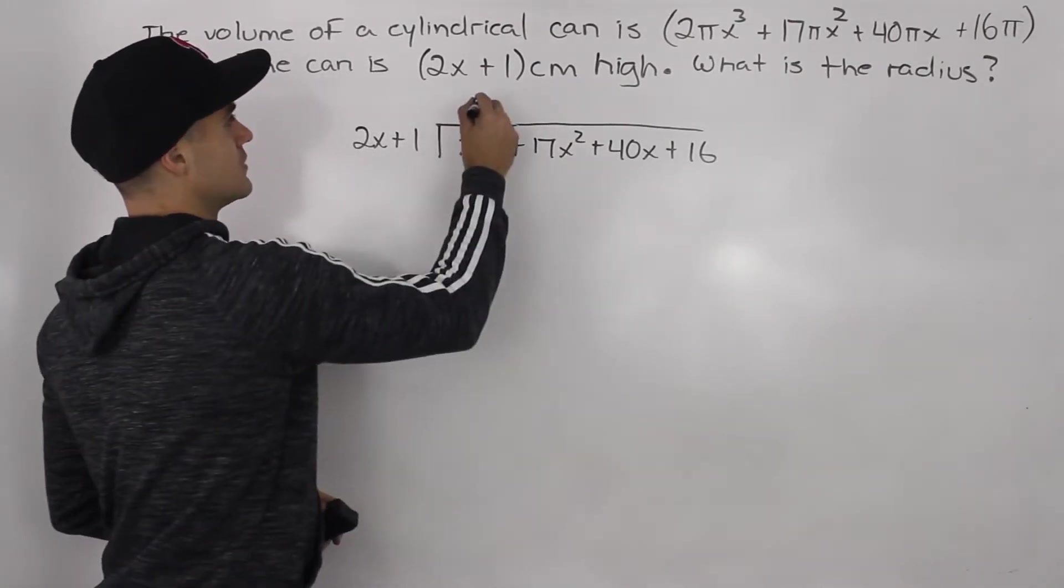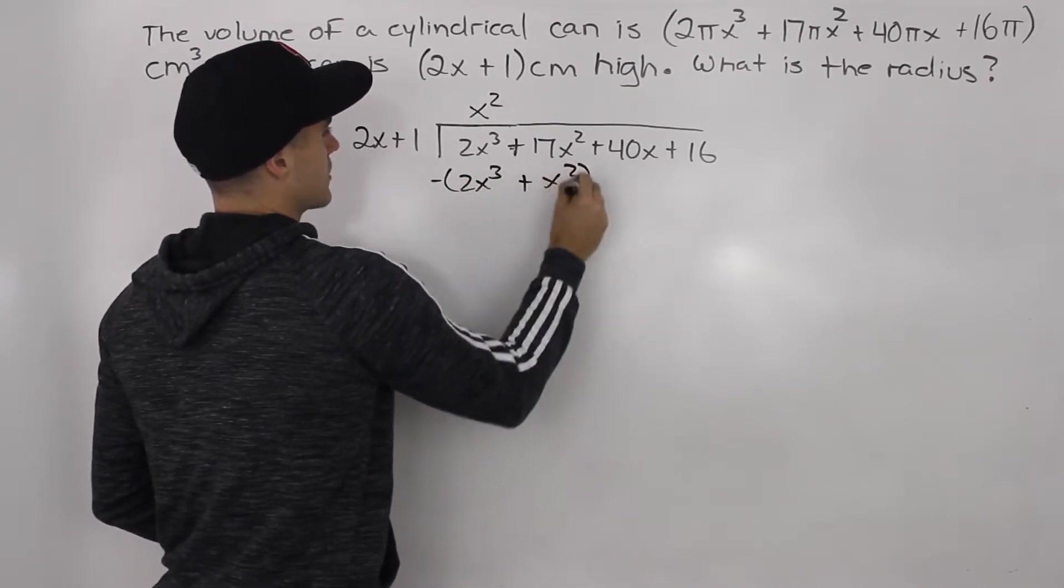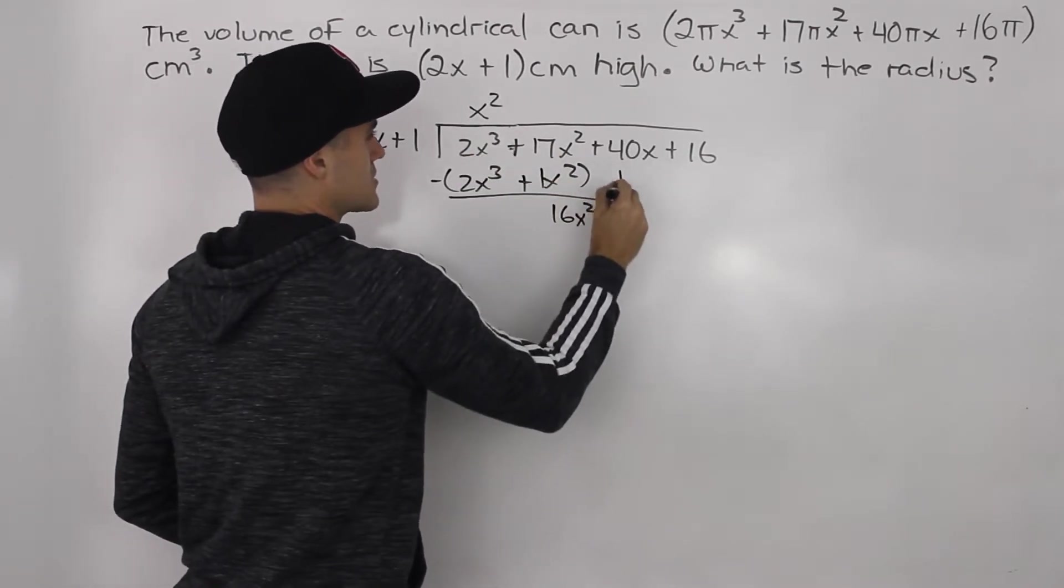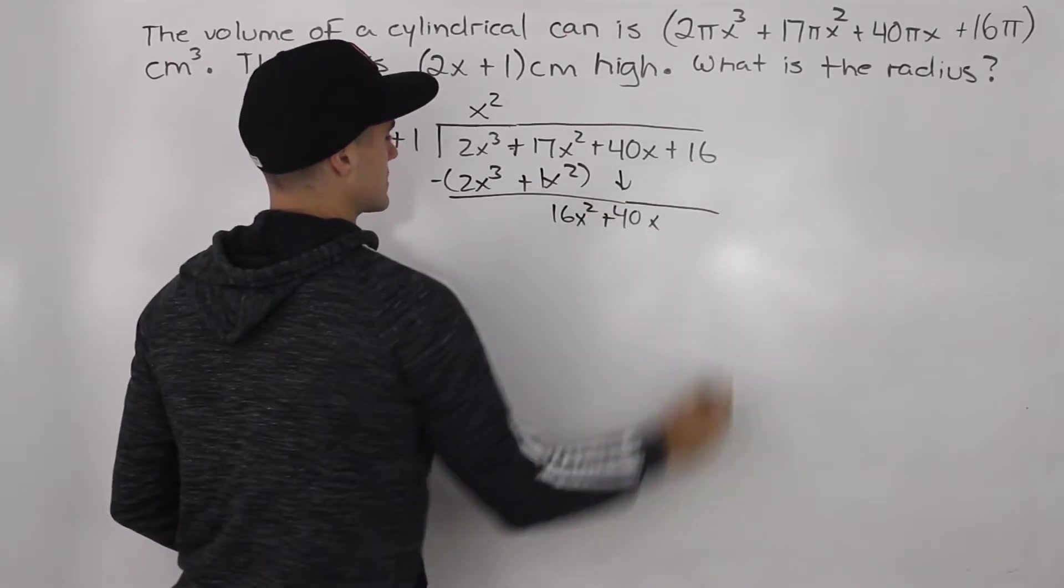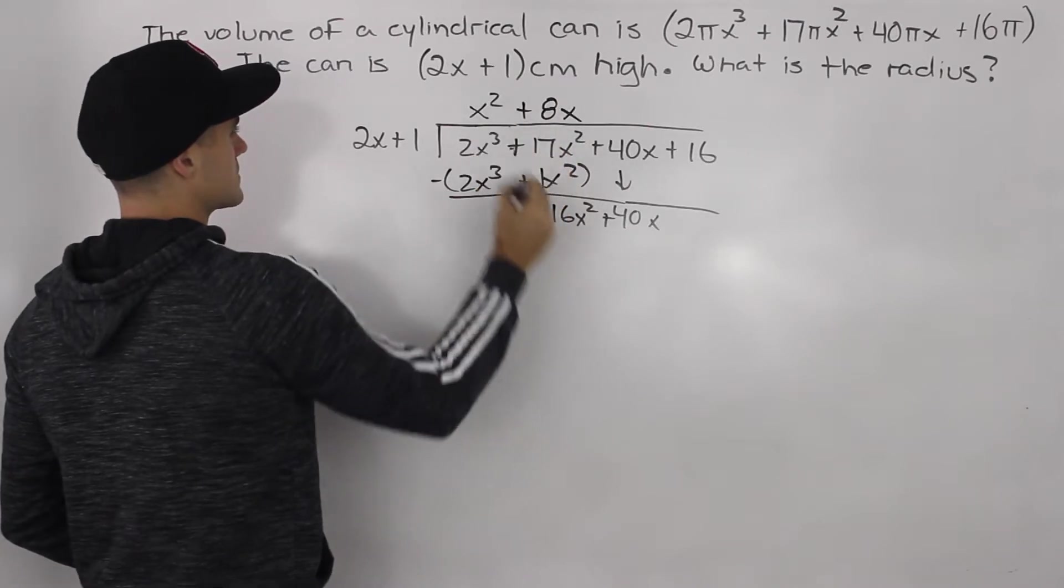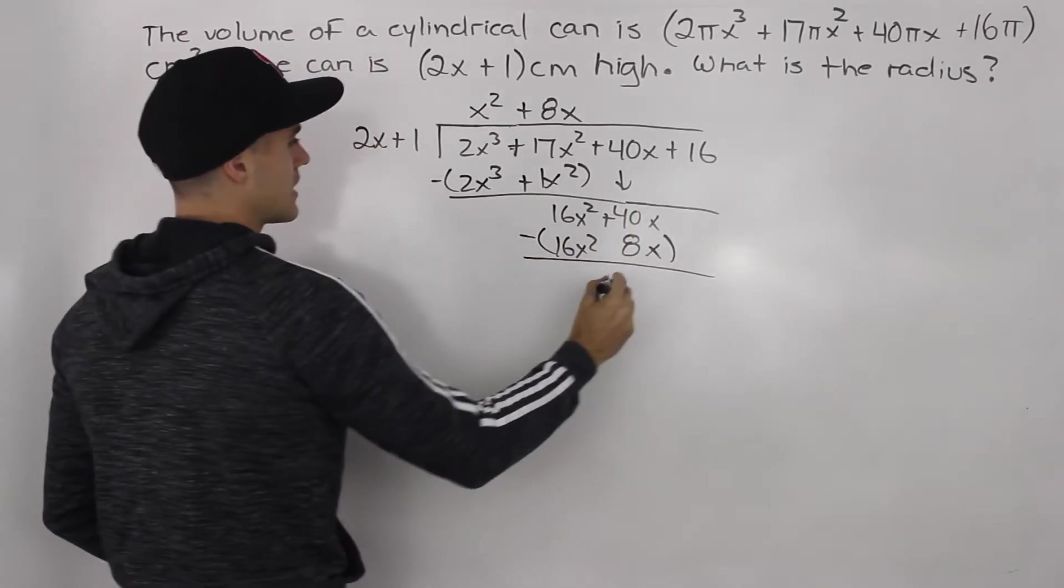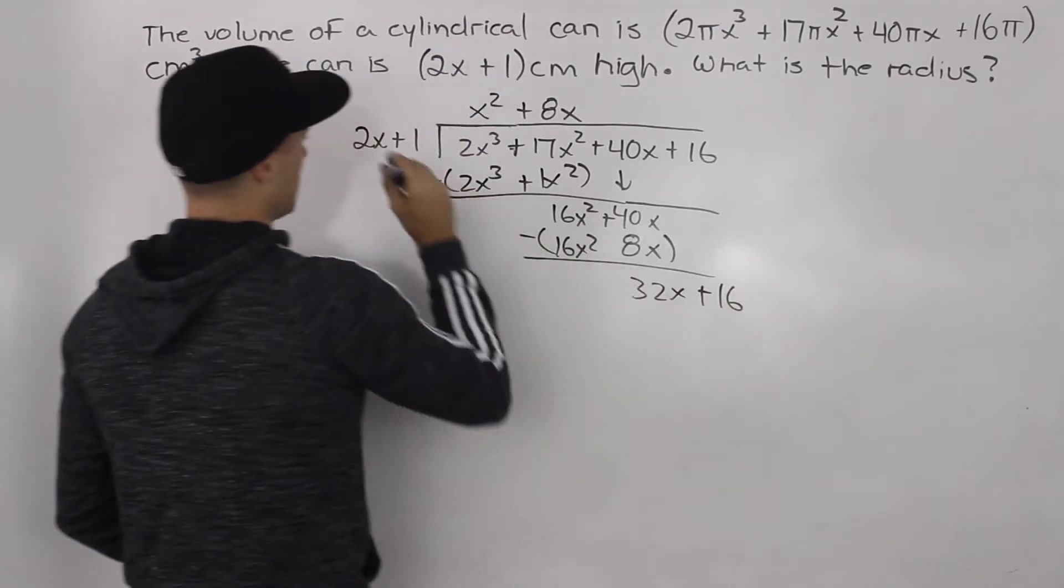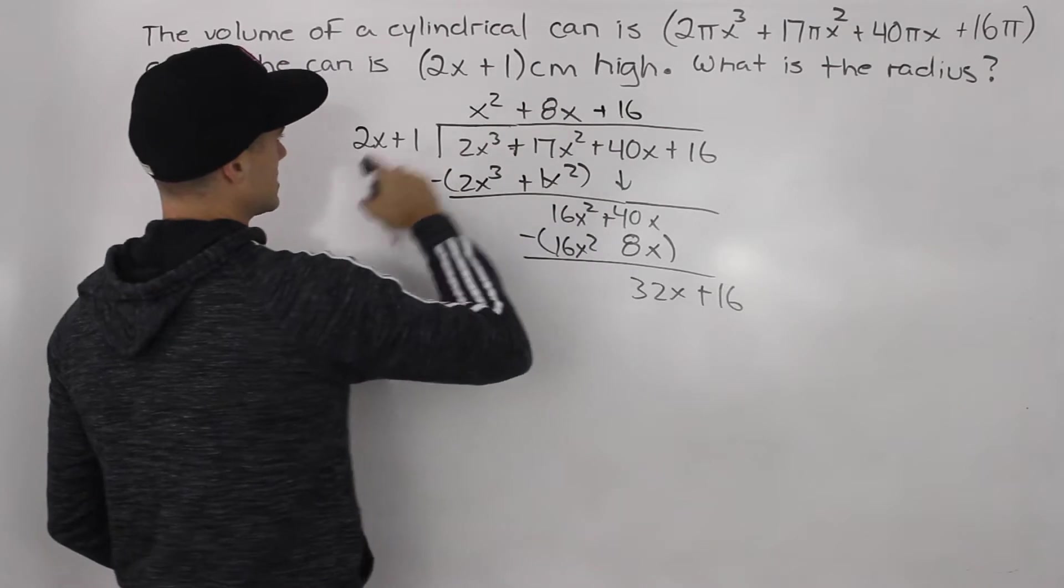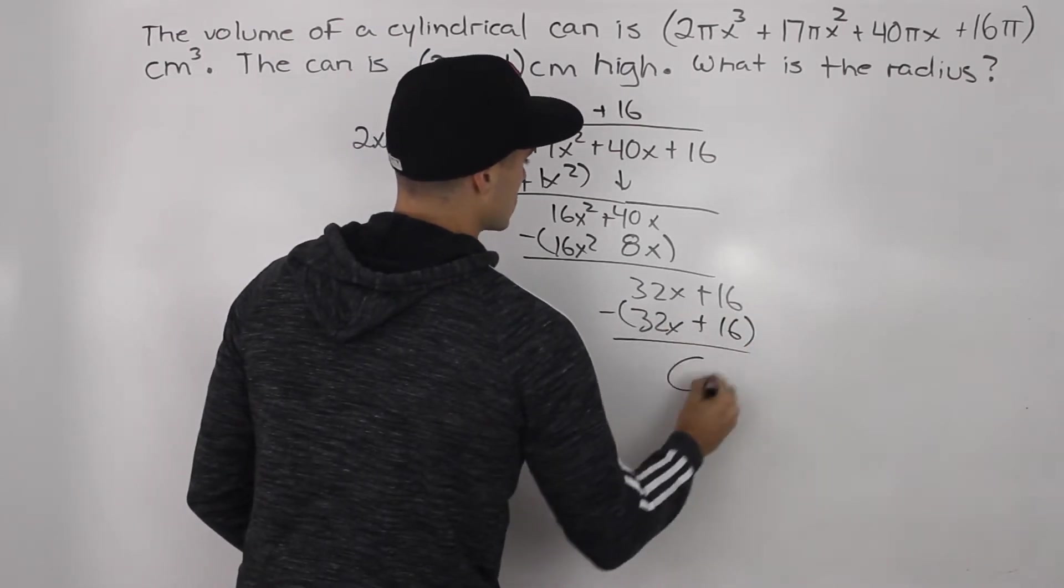How many times does 2x go into 2x³? x² times. So x² times 2x gives us 2x³, x² times 1 gives us x². Subtract both of these. 2x³ cancel out. 17x² minus 1x² gives us 16x². Let's bring this 40x down. 2x goes into 16x² 8x times. 8x times 2x is 16x², 8x times 1 gives us 8x. When we subtract, 40x minus 8x gives us 32x plus 16. How many times does 2x go into 32x? 16 times. Multiplying everything out: 16 times 2x gives us 32x, 16 times 1 gives us 16. And these net out to 0.